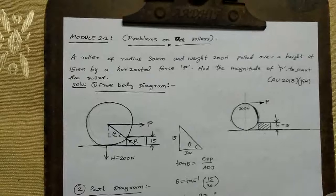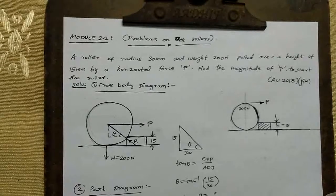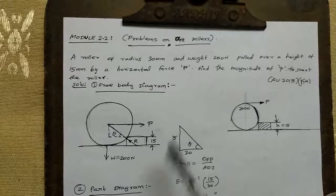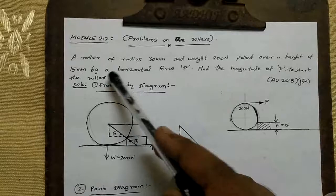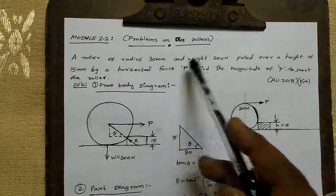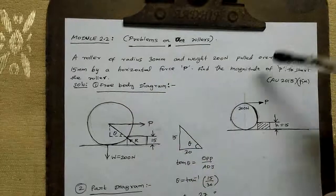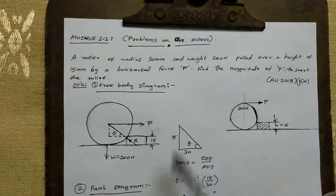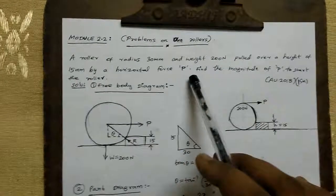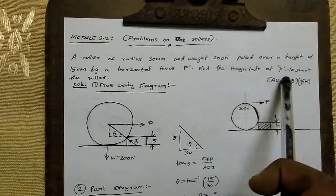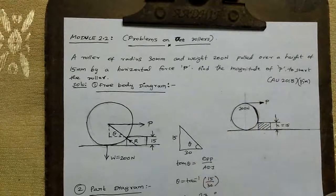Hi guys, this is module 2.2, problem on one roller. A roller of radius 30 mm and weight 200 newton is pulled over a height of 15 mm by a horizontal force P. Find the magnitude of force P to start the roller.